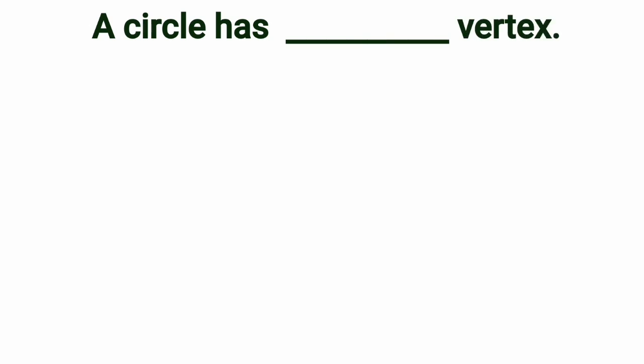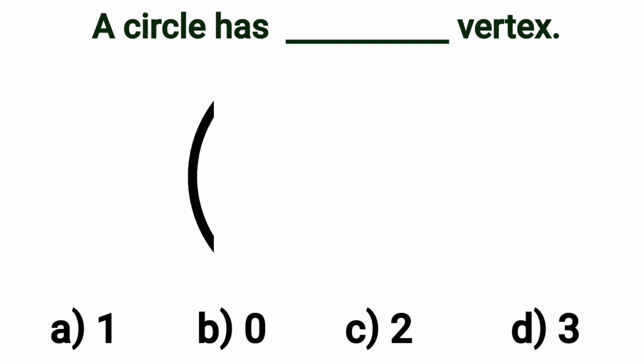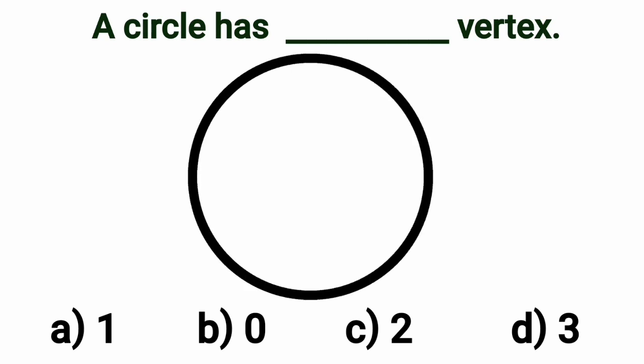Second question is, a circle has dash vertex. We will draw a circle firstly. And here is the circle. In this circle, there is no vertex. We can see a circle has no vertex and it has no side. No vertex means 0 vertex. Yes, a circle has 0 vertex. So, option B, 0 is the right option here and we will put a tick mark at option B.